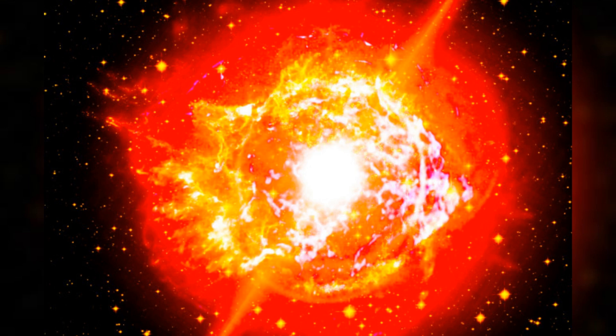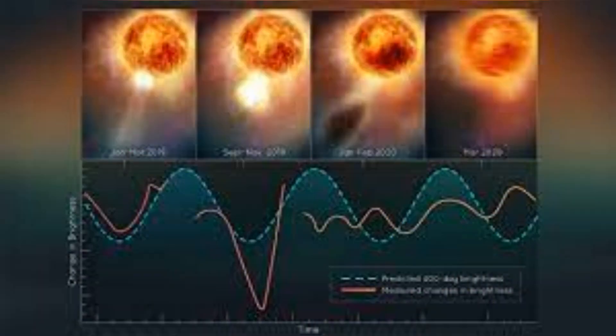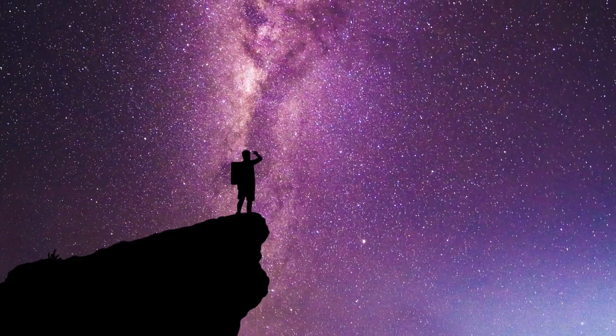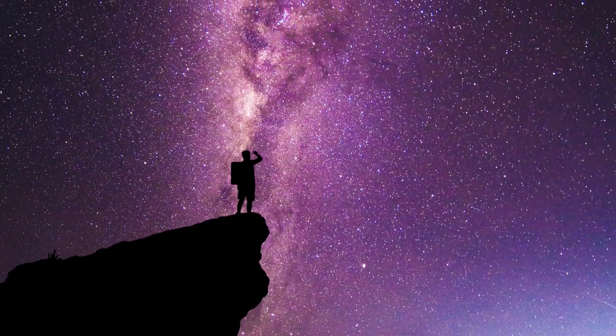But it's not just its color that's intriguing. Betelgeuse's brightness fluctuates in a semi-regular pattern, following cycles of about 400 days and another longer cycle of around 5 years. However, the star's unpredictability adds to its mystique.